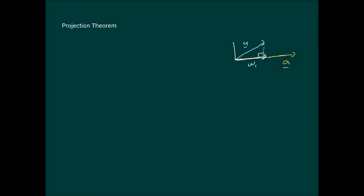We define another vector w2, which is perpendicular to w1. These are the facts: number one, w1 and w2 are orthogonal to each other, so their dot product is zero. The other thing we can note is that u is equal to w1 plus w2, by the geometrical definition of addition. If you add w1 and w2, you end up with u.